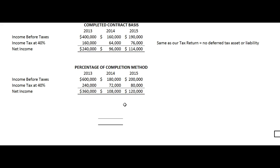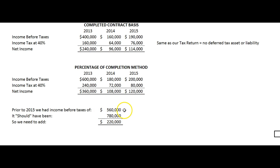They have to go back to the beginning of time and restate all their financials when changing from the completed contract basis to the percentage of completion method. But 2013 and 2014 are closed, so we have to do a catch-up in 2015. In 2013 they had $400,000 of income before taxes and would have had $600,000 — that's an extra $200,000 of gross profit. In 2014 they had $160,000 and would have had $180,000 — another $20,000. So prior to 2015 we need to add $220,000 of estimated gross profit into construction in process.